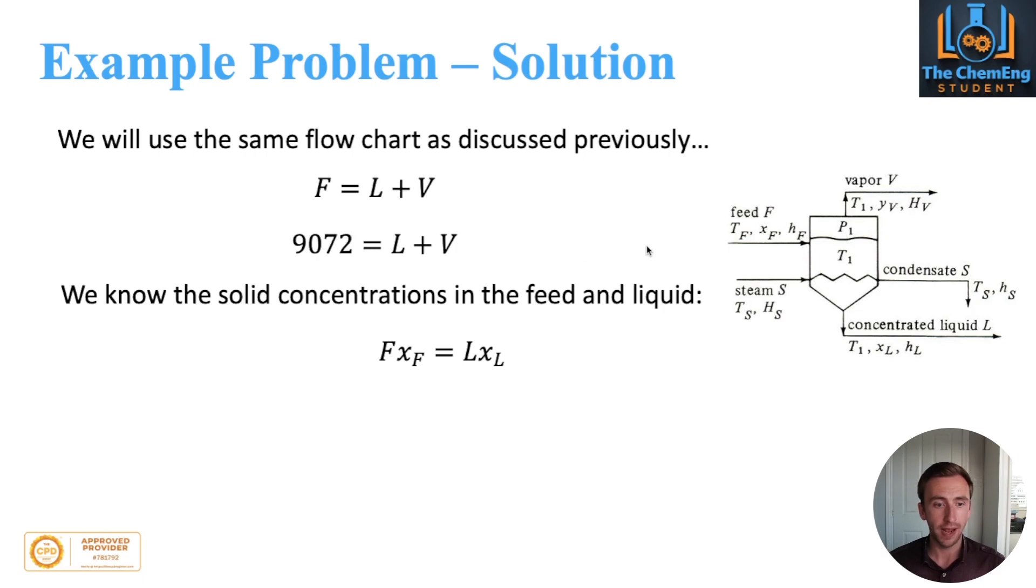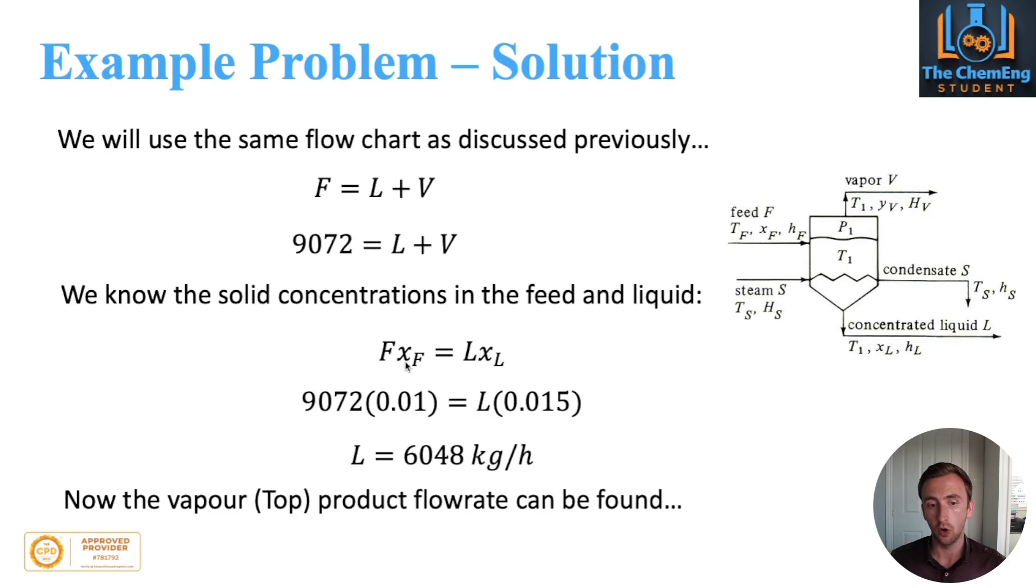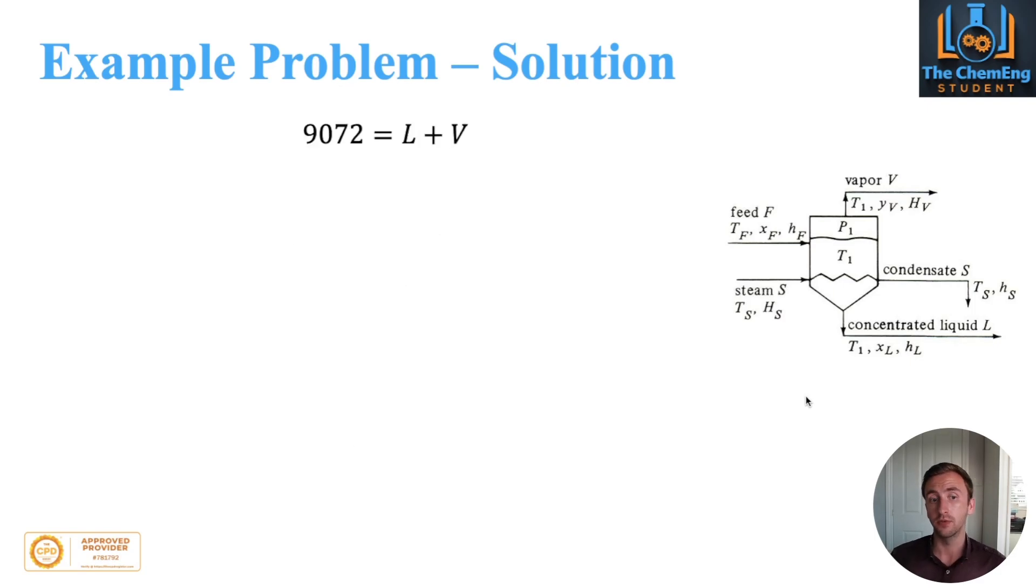What we can do is perform a solid balance on the system, because this will get rid of the V term. We know the fractions of the feed are 1% and the liquid is 1.5% respectively. When we substitute the values in, the only unknown becomes L. That tells us we have 6048 kilograms per hour of concentrated liquid. Therefore, now the top product can be found because we simply sub this back in, and that tells us we have 3024 kilograms per hour of vapor being produced in the system. That is literally as difficult as it gets.